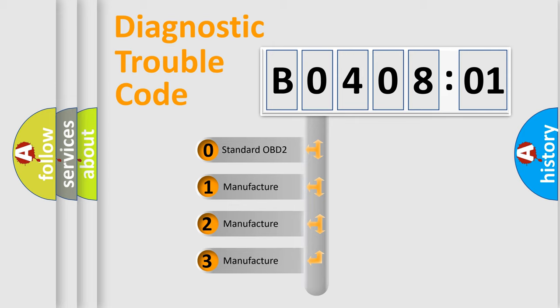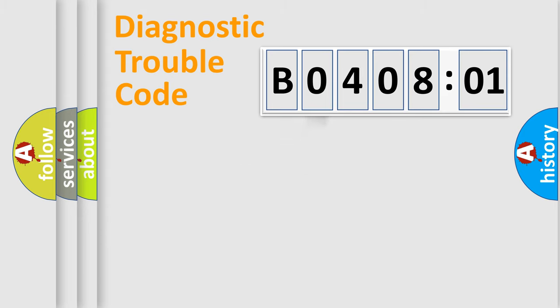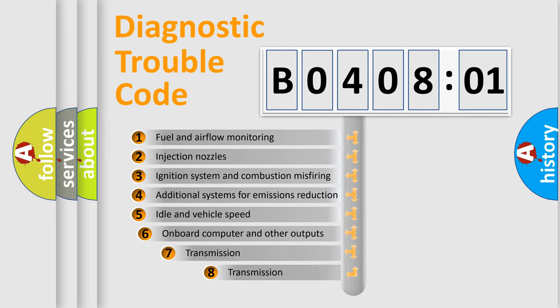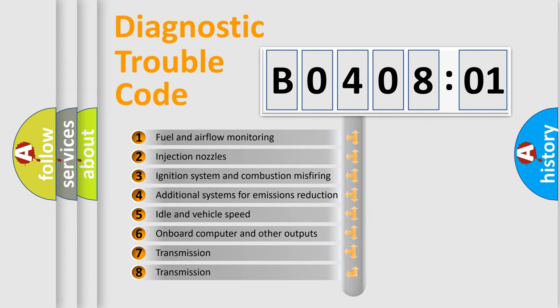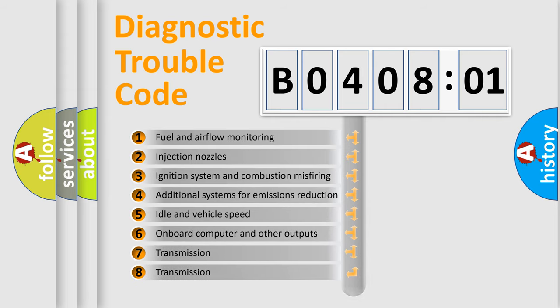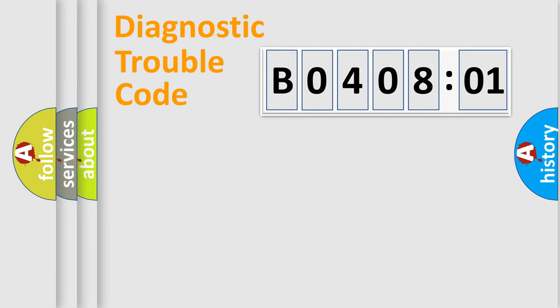If the second character is expressed as zero, it is a standardized error. In the case of numbers 1, 2, or 3, it is a manufacturer-specific error. The third character specifies a subset of errors. The distribution shown is valid only for the standardized DTC code. Only the last two characters define the specific fault of the group.